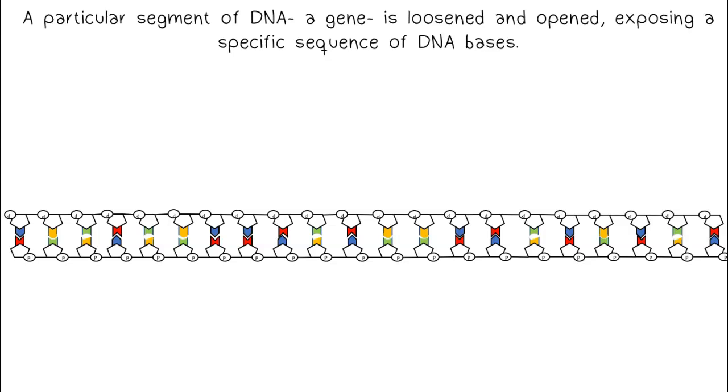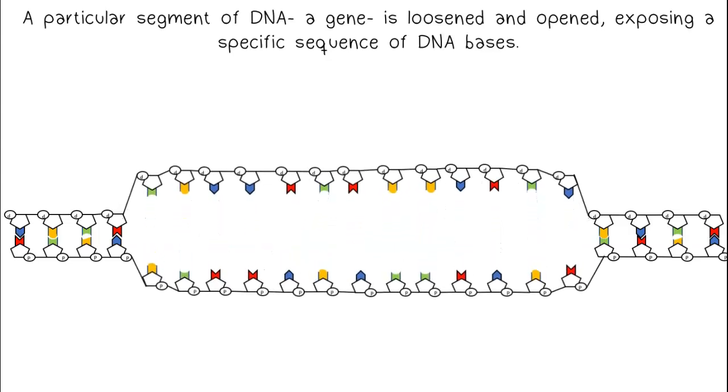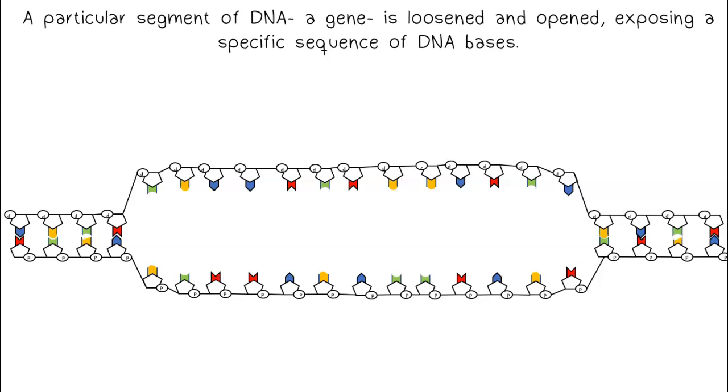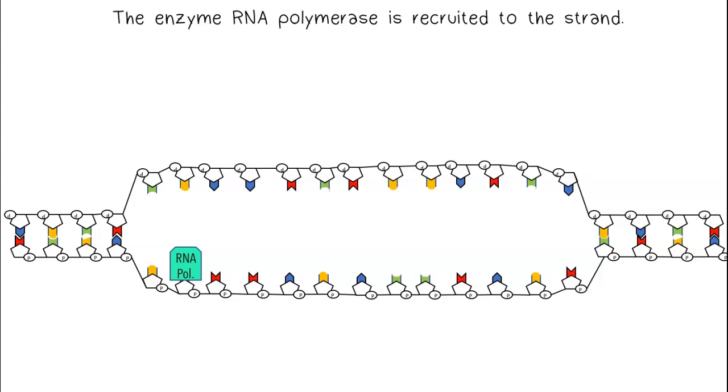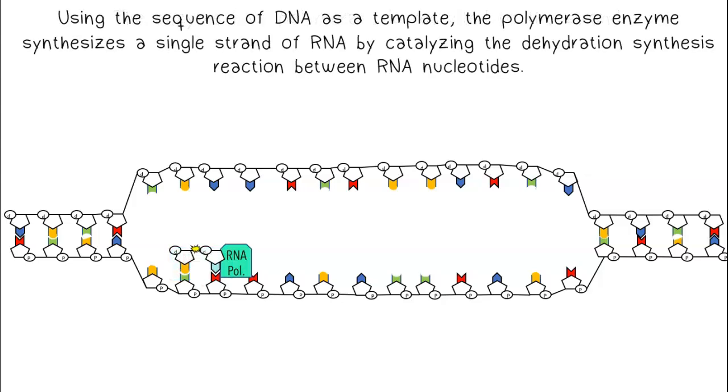A particular segment of DNA, a gene, is loosened and opened, exposing a specific sequence of DNA bases. The enzyme RNA polymerase is recruited to the strand. Using the sequence of DNA as a template, the polymerase enzyme synthesizes a single strand of RNA by catalyzing the dehydration synthesis reaction between RNA nucleotides.